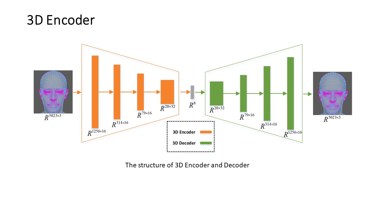We propose the utilization of a graph as a suitable data structure for defining the connectivity between vertices and edges within a 3D facial mesh. Graphs are well-suited for encoding this connectivity information, facilitating a comprehensive analysis of the mesh structure. This encoder leverages spectral-based graph convolution techniques to extract high-dimensional features from the mesh, successfully operating on non-Euclidean domains.